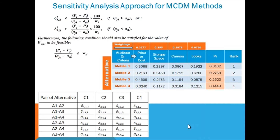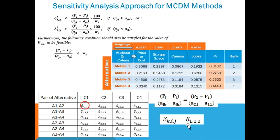Now let's find all possible values of delta and perform the sensitivity analysis. The notation is delta K IJ, where K represents the criteria number, and I and J represent the alternatives being compared. For the first cell, K is 1 (criteria 1), I is 1, and J is 2 — so we are comparing alternative 1 and alternative 2.